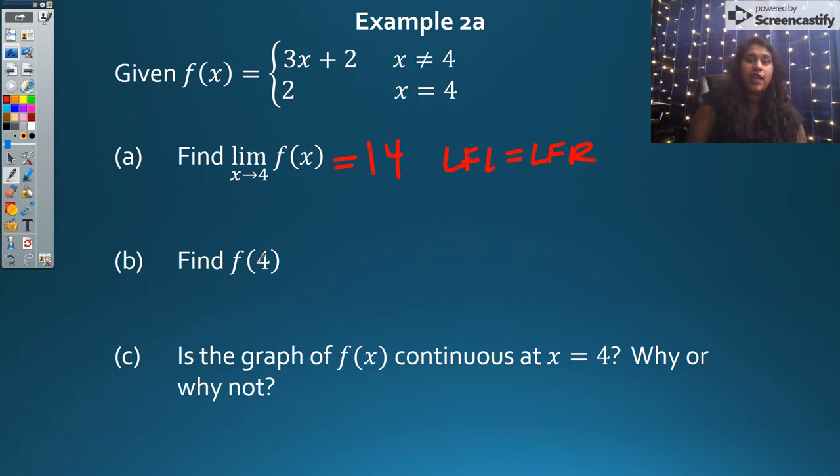Now what's my function value at 4? I come back to my graph, and I look. At 4, it cannot be this function, but at 4, it is this function right here, which is simply a coordinate point at 4 comma 2. So therefore, at f equals 4, my answer equals 2.